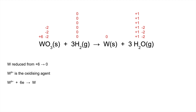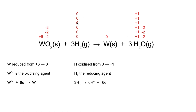The W6+ accepts six electrons from the species being oxidized and is reduced to tungsten, the atom. Moving on to the reducing agent: hydrogen has been oxidized from zero to plus one, so hydrogen is the reducing agent. Those three moles of H2 — each hydrogen atom in those three moles — lost an electron and became H+ ions. Those six electrons are the ones given to the W6+ to become tungsten metal.